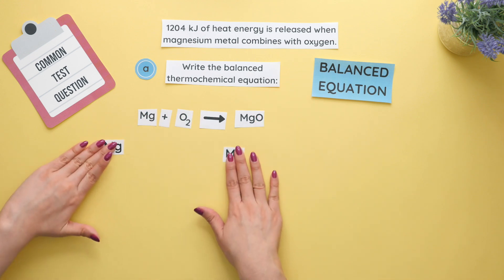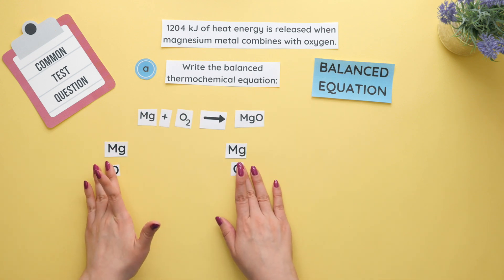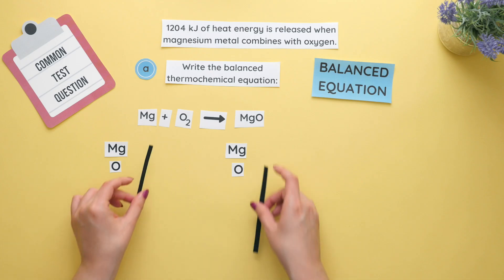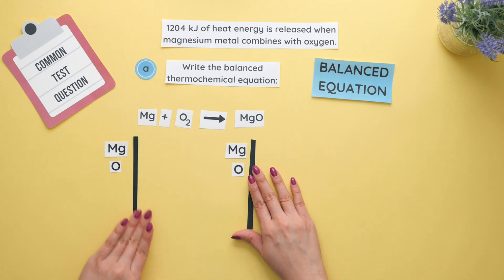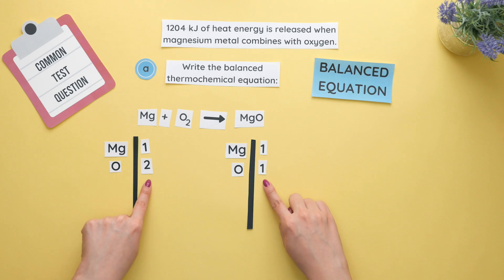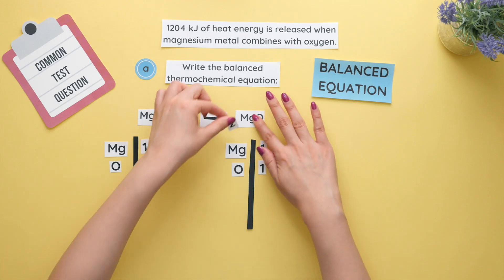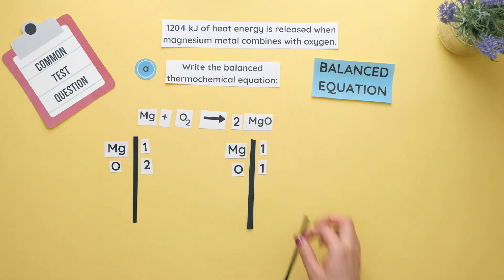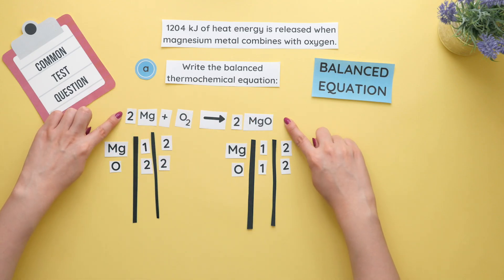Balance the chemical equation by separating each element and counting how much of each element there is on either side. On the reactant side we have one magnesium and two oxygens and on the product side we have one magnesium and one oxygen. We need to balance out the oxygens so we'll add a two in front of our product and we now have two magnesiums and two oxygens on the product side. So now the magnesium needs a two in front on the reactant side and this is our balanced equation.